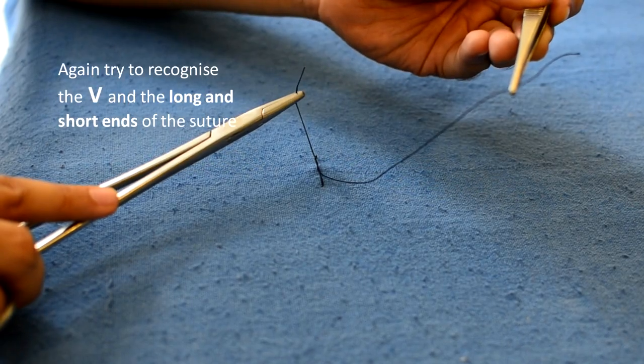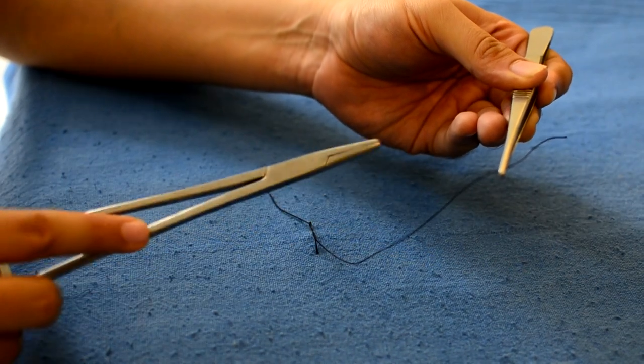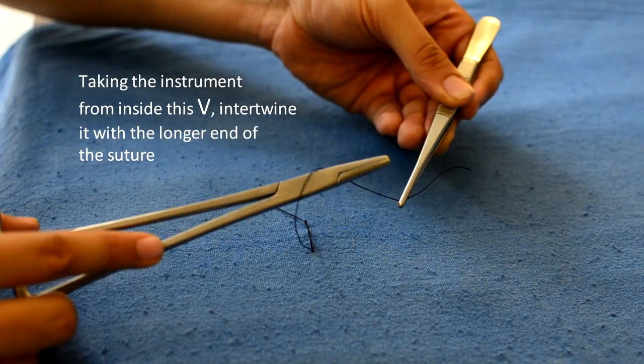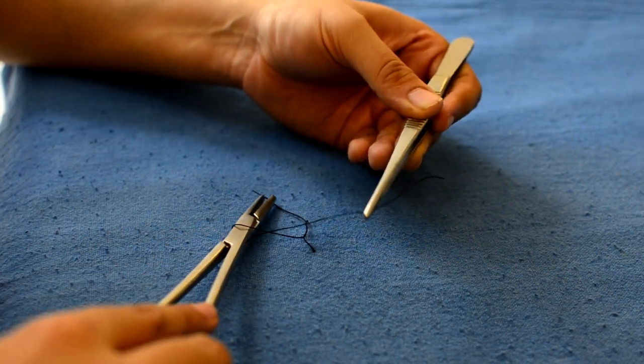Again you should try to recognize the V and the long and short ends of the suture. From within the V, the instrument is again intertwined with the longer end of the suture. This time only once and then the short end is pulled out.